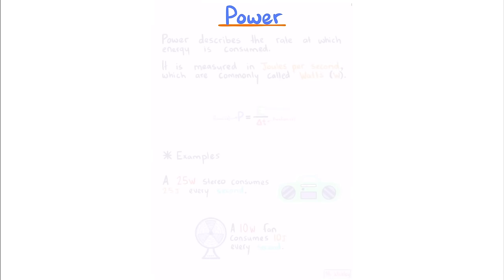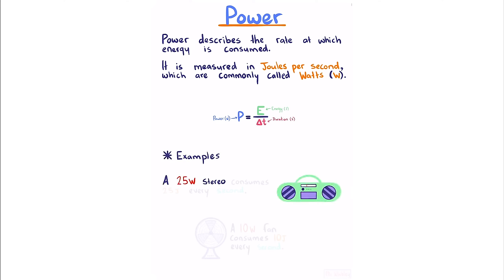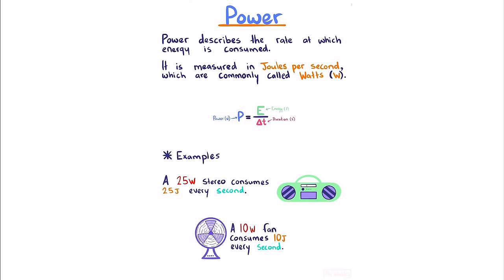Power. Power describes the rate at which energy is consumed, measured in joules per second, commonly called watts. The equation is: power equals energy divided by duration. For example, a 25-watt stereo consumes 25 joules every second, and a 10-watt fan consumes 10 joules every second.